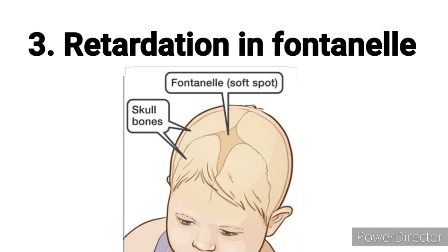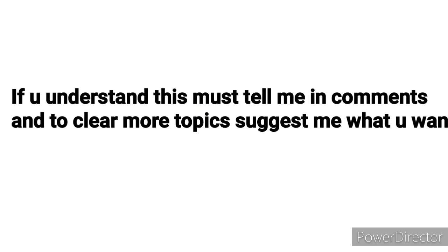The third cardinal feature is retardation in fontanelle ossification. Fontanelles are the membranous gaps — also called sutures — between the cranial bones. The cranium is composed of many bones; the gaps between these bones, as you can see in this picture, are called fontanelles. When there is a retardation in fontanelle ossification, meaning a defect in the ossification of these fontanelles, that constitutes the third cardinal feature. These are the three primary cardinal features of cleidocranial dysostosis. This disease may be hereditary or may be due to other causes.